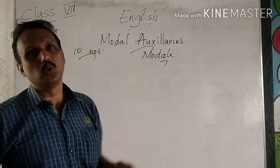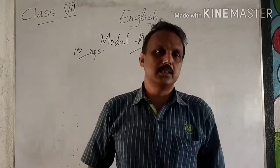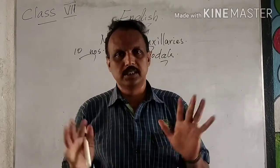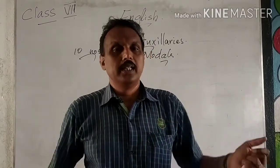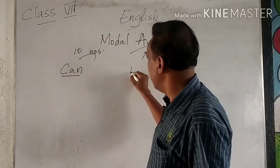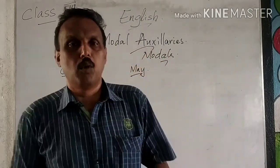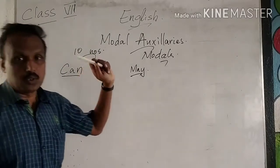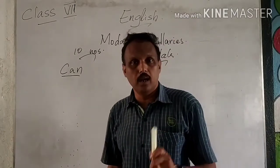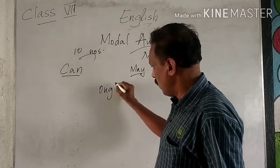These modals usually show mood. The 10 modals are: can, could, may, might, shall, should, must, ought to, will, and would. So there are 10 modals — can, could, shall, should, may, might, will, would, must, and ought.